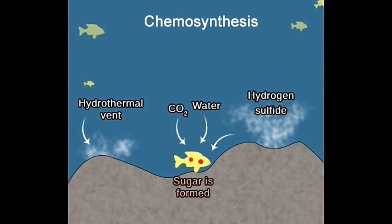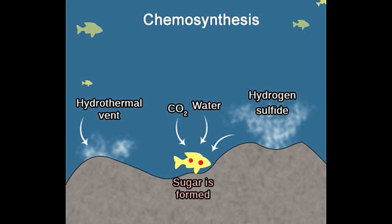Also, unlike photosynthesis, chemosynthesis takes place in harsh conditions, at extreme temperatures and high water pressure of the ocean floor. Energy used: Photosynthesis is driven by adequate sunlight, which means the process does not occur at night. Chemosynthesis takes place without the help of any light source. The oxidation reactions of inorganic compounds release a substantial amount of energy which assists to fuel this process.